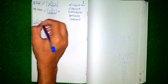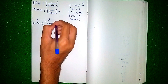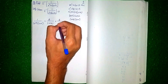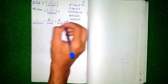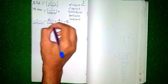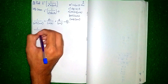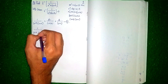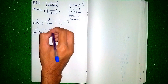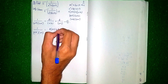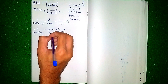Now apply partial fractions. We write 1 by (s + 5)(s + 1) as A by (s + 5) plus B by (s + 1). Cross-multiplying: 1 equals A(s + 1) plus B(s + 5). This is our working equation for finding A and B.